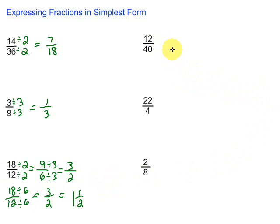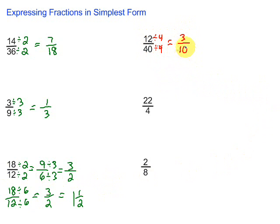Alright, let's take a look at these last 3. This first one: 12 over 40. What can we divide by? Let's try dividing by 4, top and bottom. 12 divided by 4 is 3, and 40 divided by 4 is 10. Can 3 go into 10? Nope, so we're done — 3 over 10.